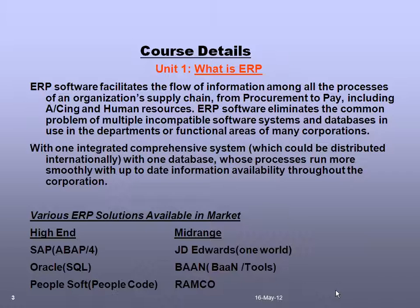To minimize cost and maximize productivity, you use a software tool called ERP. By definition, ERP software facilitates the flow of information among all the processes of an organization's supply chain, from procure to pay, including accounting and human resources. For example, when a new employee joins the organization, their personal details are added in the HR system — it could be PeopleSoft or something else — and that data needs to get reflected in the accounts payable module for monthly salary payment.